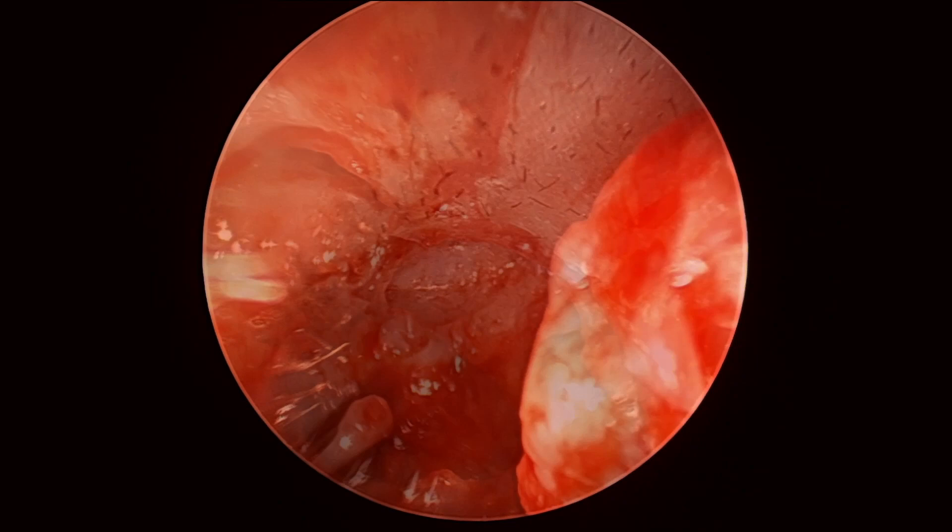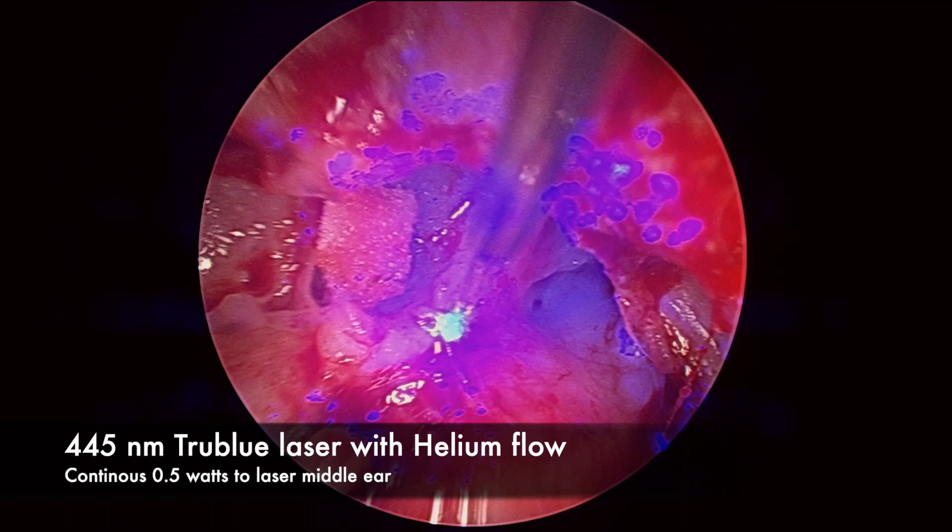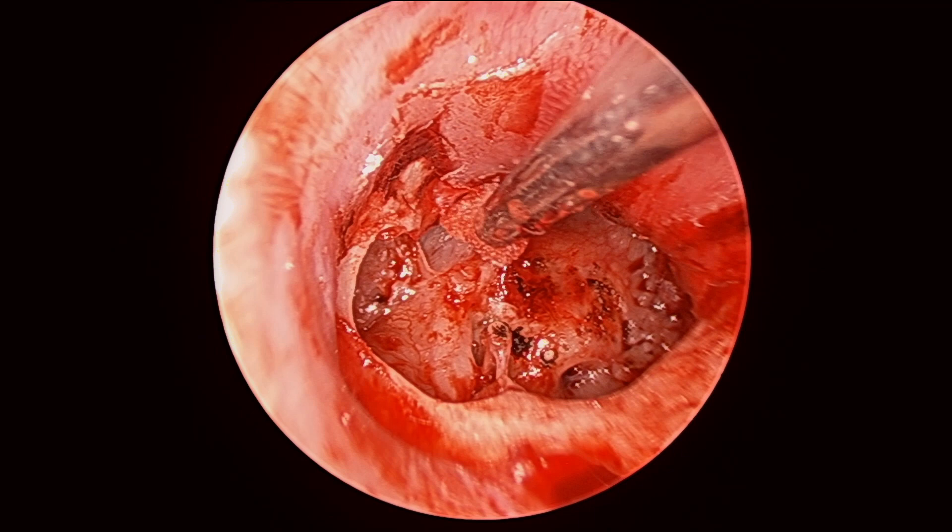The area was then treated with laser using the TruBlue laser to try and reduce residual rates, with a small amount of gel foam protecting the facial nerve. Finally, a view here with the repair using composite cartilage and perichondrium.